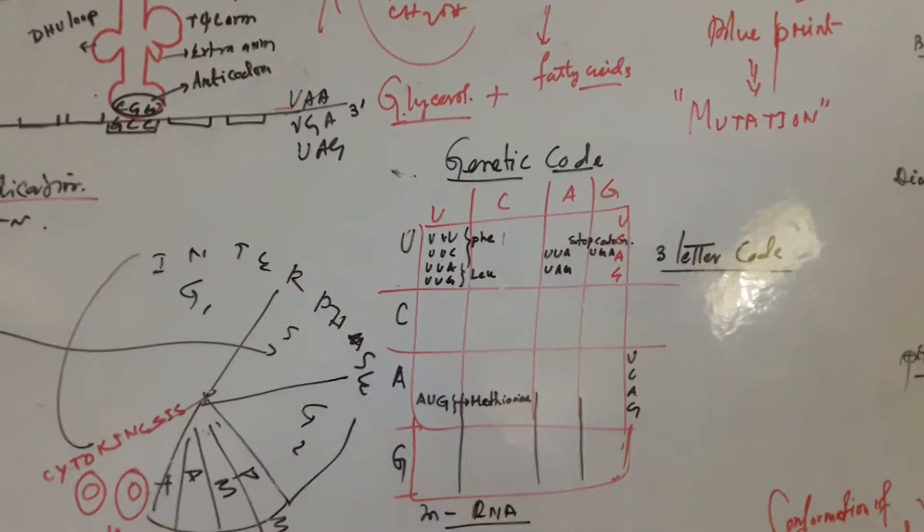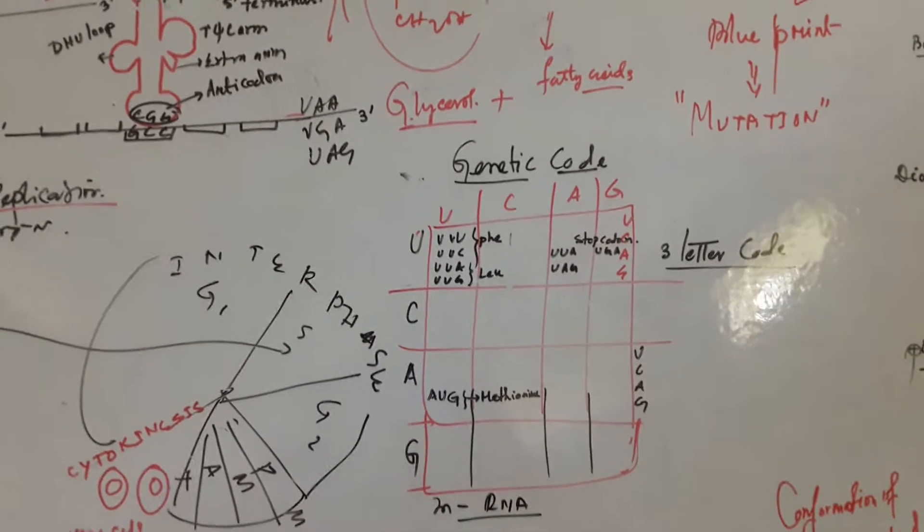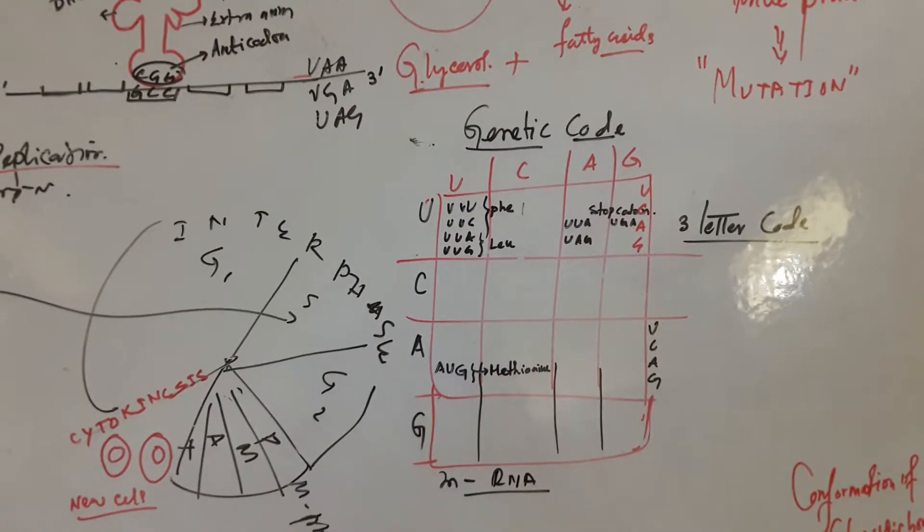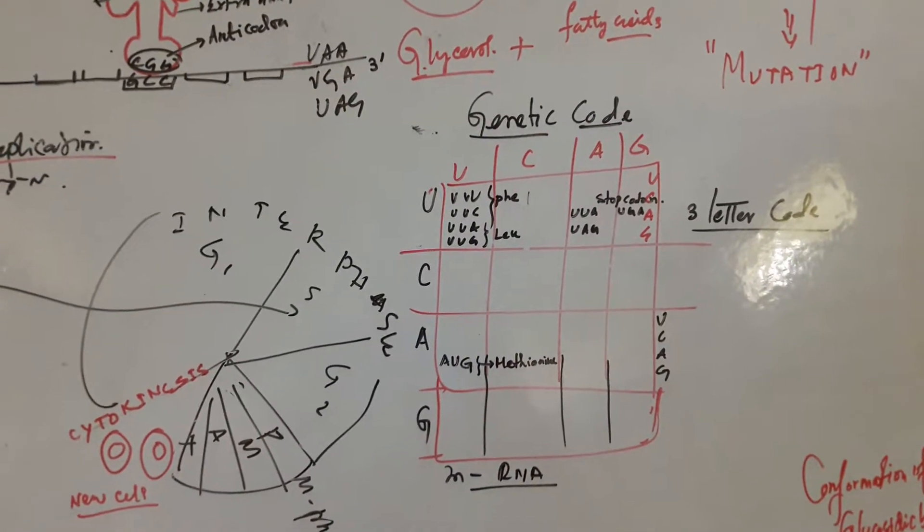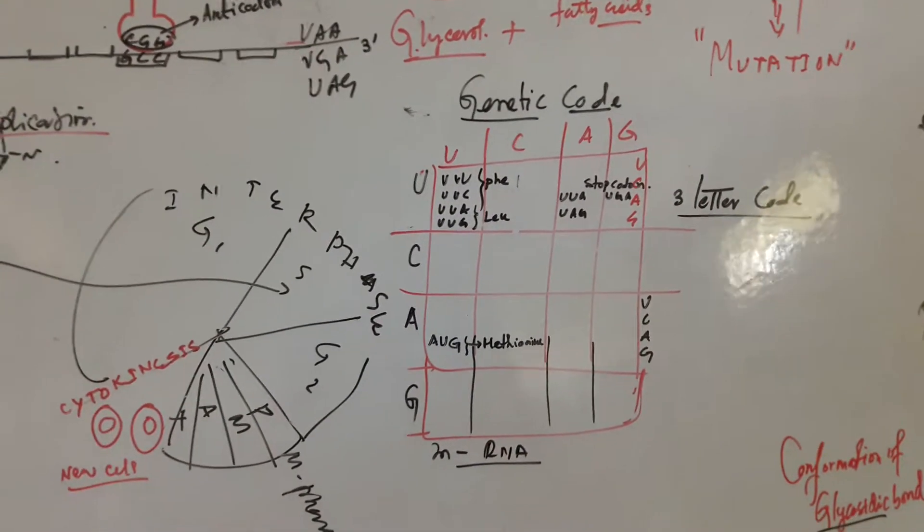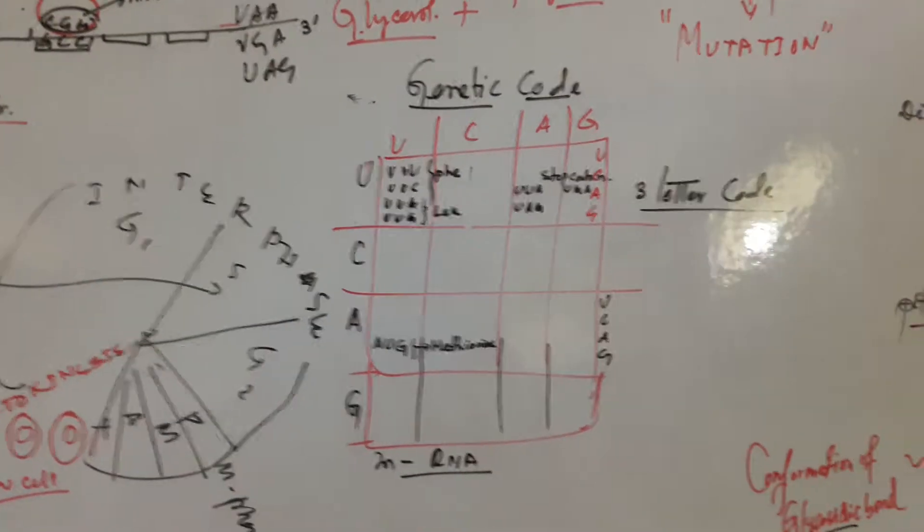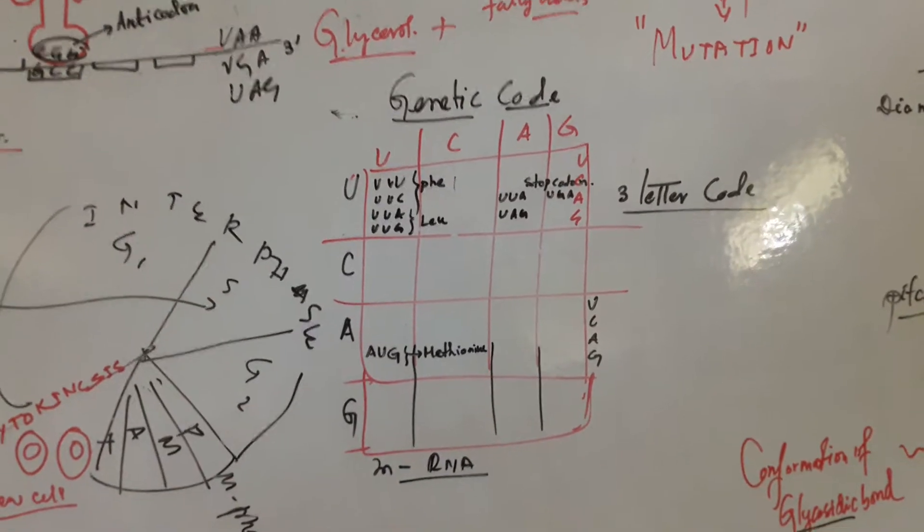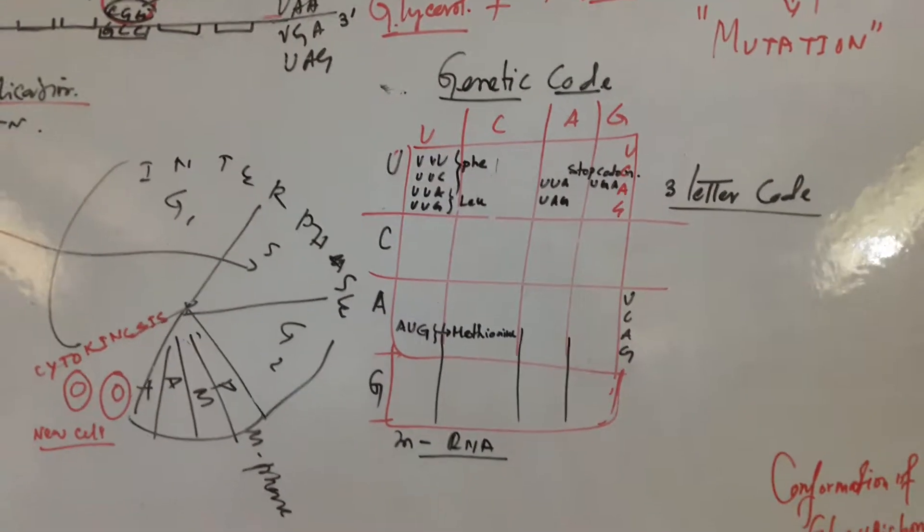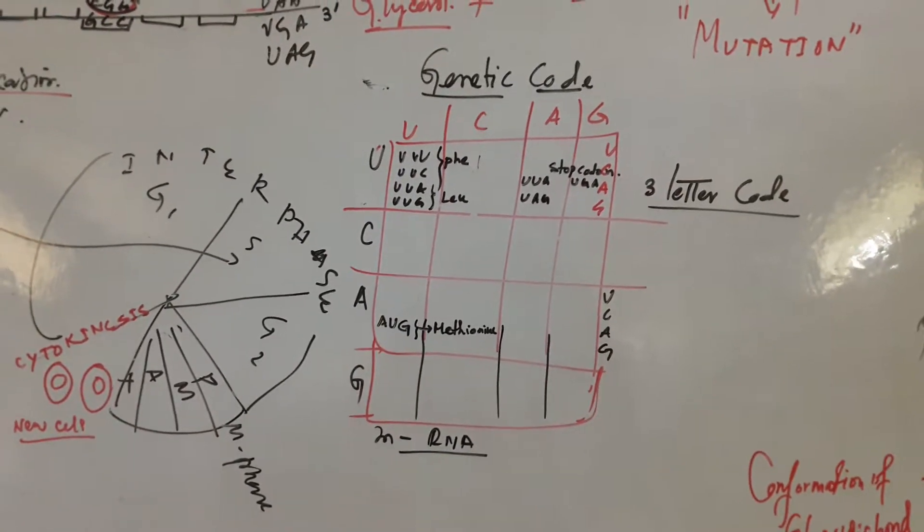These three letter codes are called codons which come from the genetic code. I have shown the basic pattern. Here a few important amino acids I have shown: U, C, A, G repeated, and the first letter code U, C, A, G in the very left, horizontally and vertically placed. Here you see various amino acids. And UGA, UGA, UGA—these are the stop codons.